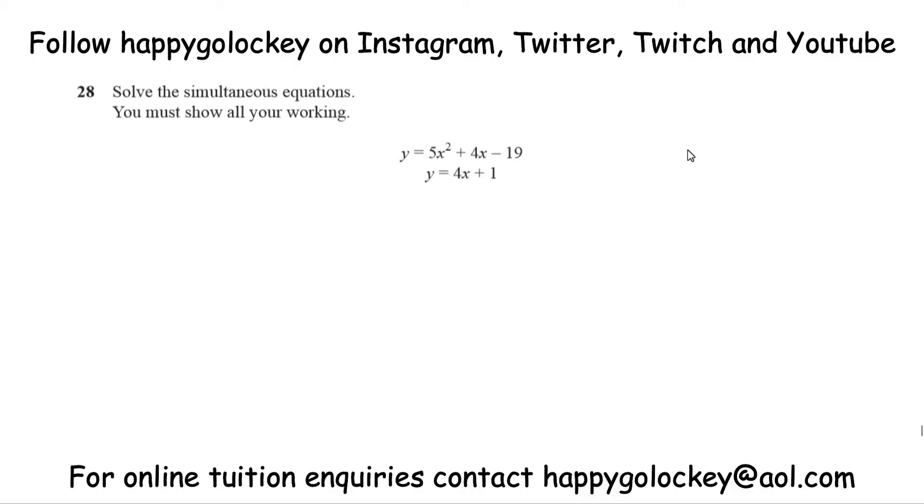Alright guys, back with the worked solutions then. So the first thing I'm going to look at is there's two different types of equations here. A quadratic equation, an equation containing x squared as your highest term, will be like a U shape, called a parabola, and this one, a linear equation, the second equation, will be a straight line.